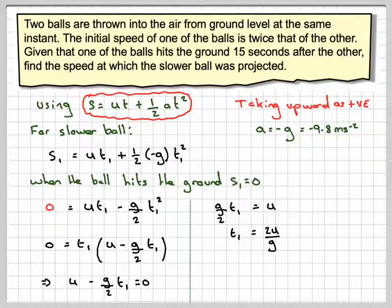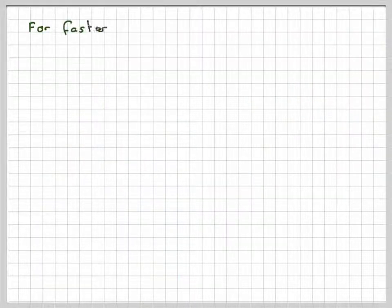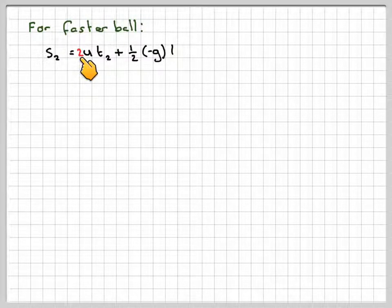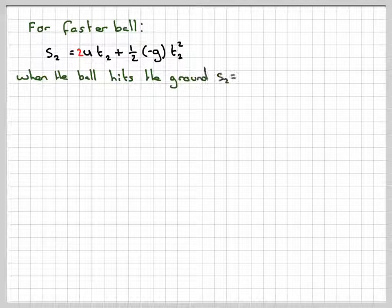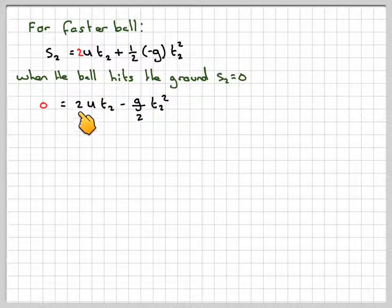We'll come back to that in a minute. Now let's now consider the faster ball. The faster ball will have s2 will be 2u t2 plus a half minus g t2 squared. When the ball hits the ground, s2 will be equal to zero. So we're going to put this equal to zero. So zero will be equal to 2u t2 minus g over 2 t2 squared.